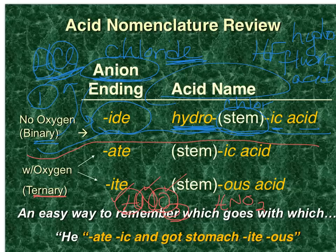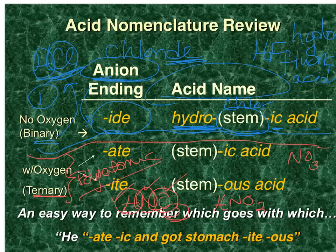With ternary acids, most if not all of them are made from polyatomic anions. For example, NO3, which is nitrate, and NO2, which is nitrite. Those are both polyatomic ions, and they combine with hydrogen to make a ternary acid.